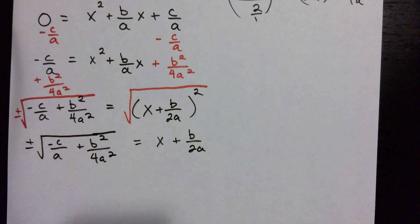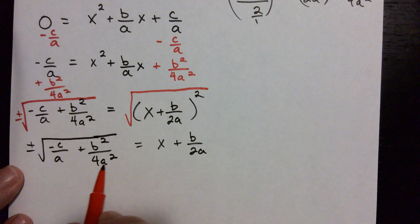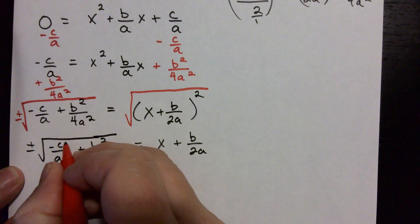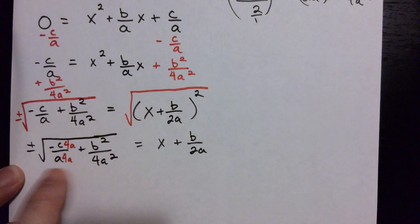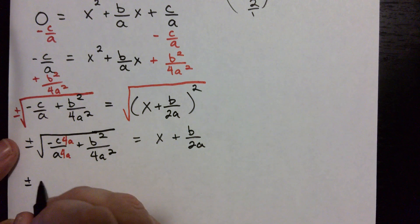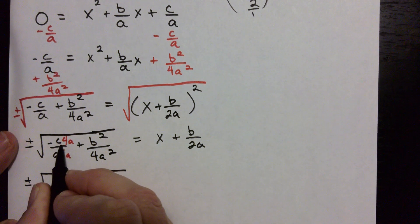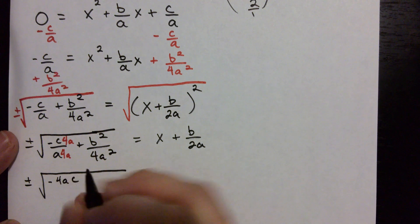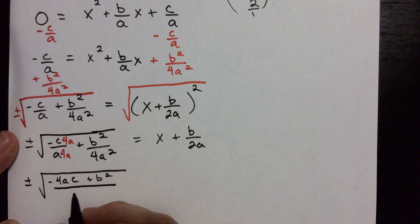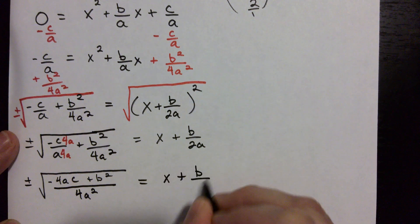Let's look at the left side and find a common denominator between a and 4a². We need to turn them both into 4a². The first term only has a, so it needs a factor of 4a — multiply the top and bottom by 4a to get the common denominator of 4a². So we get: plus or minus the square root of (negative 4ac + b²) all divided by 4a², equals x + b/(2a).